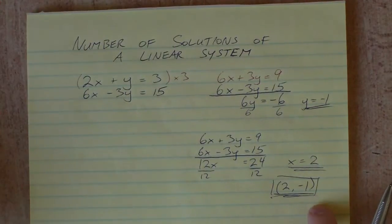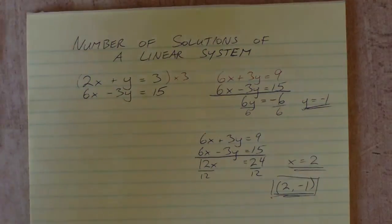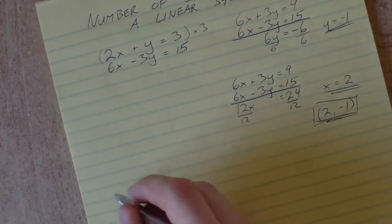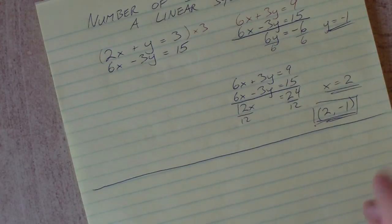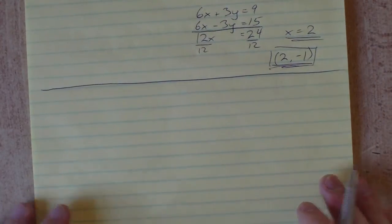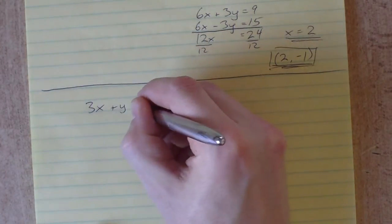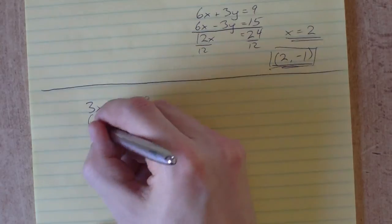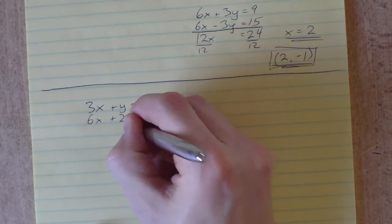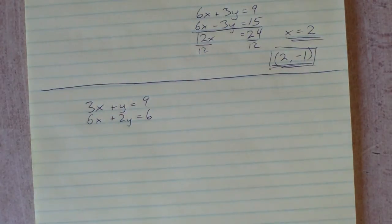Now let's look at a case where the algebra doesn't work out quite so nicely. Let's try 3x plus y equals 9 and 6x plus 2y equals 6.